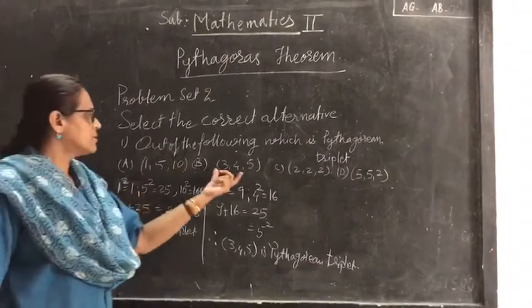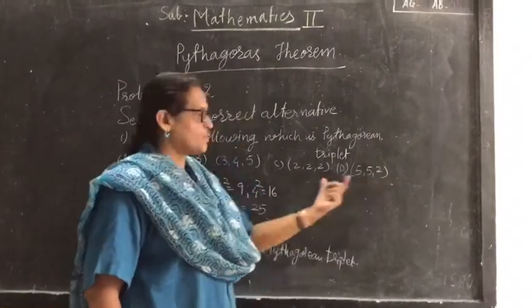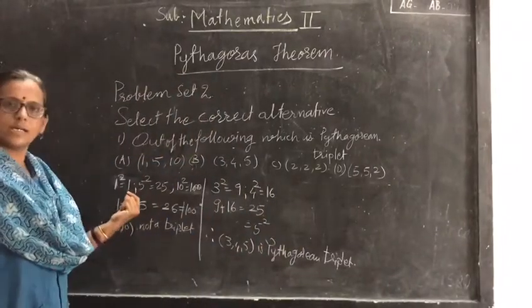Triplets are given: 1, 5, 10; 3, 4, 5; 2, 2, 2 and 5, 5, 2. Out of this, you have to select which one is the correct alternative.